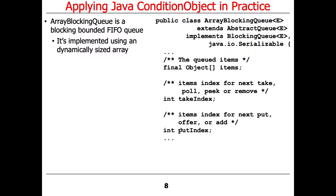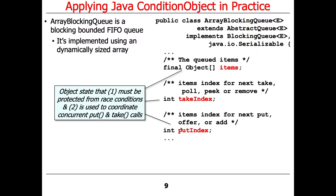Internally, the array is implemented with a dynamically sized built-in array called items. We also have some other state fields: takeIndex, putIndex, and count. This object state must be protected from race conditions, which implies a ReentrantLock.